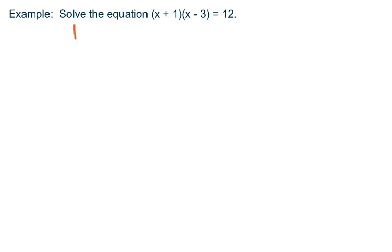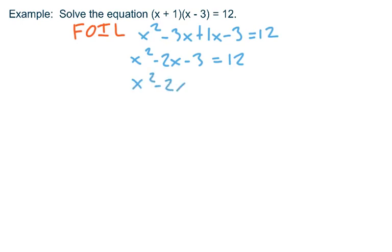The left side is a product of two binomials. Let's multiply those out using the FOIL rule: first, outside, inside, last. The product of the first terms would be x squared, the outside terms would be negative 3x, the inside terms would be 1x, and the last terms would be negative 3. Combine like terms: x squared minus 2x minus 3 equals 12. Now we're beginning to look like the other examples. Get a zero on one side, so subtract 12 from both sides. That gives us x squared minus 2x minus 15 equals 0.